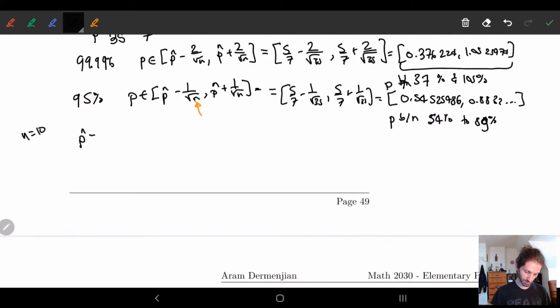So p hat in this case, we have n is equal to 10 and we made r equal to 7. So p is equal to 7 tenths. So we have this is r over n. And so let's calculate our 99 and 95% accuracy.